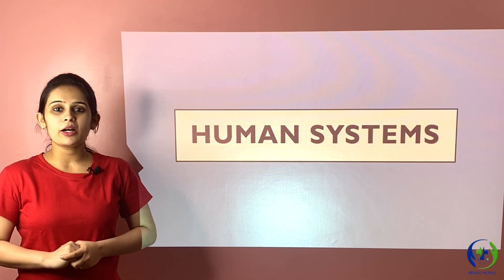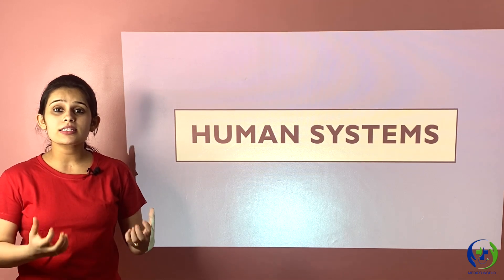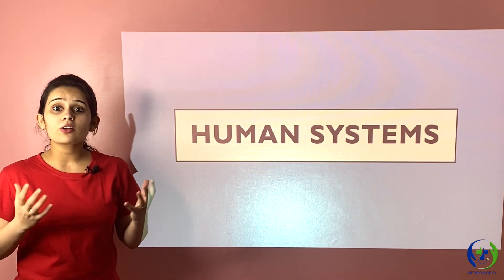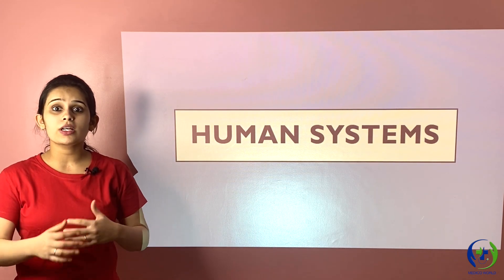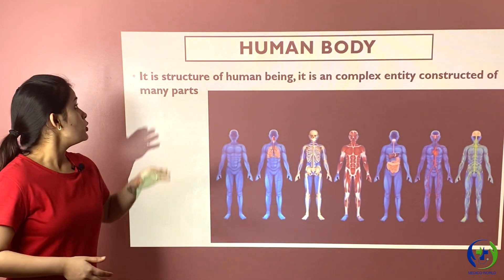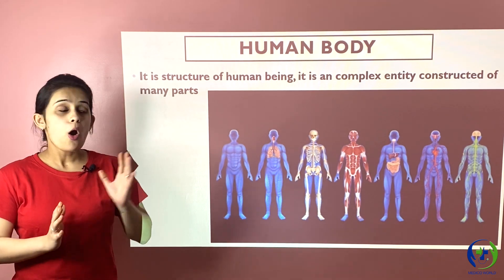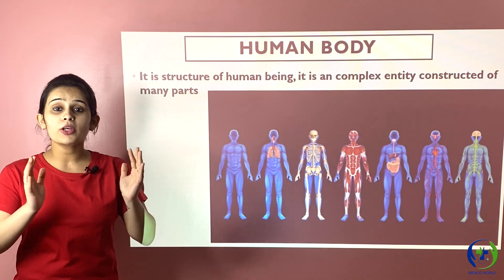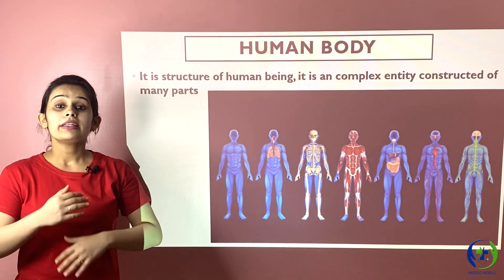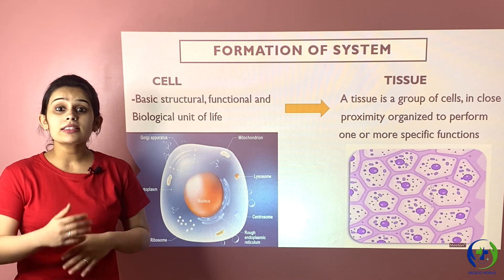Hey guys, today we'll be learning a very basic but interesting topic — human systems. How many systems are present in the human body? How do they all work together? How are all the physiological activities carried out in a human body? For that, first let us know what the human body is. The human body is the structure of a human being — it is constructed of different parts that come together to form a human body, so it is also called a complex entity.